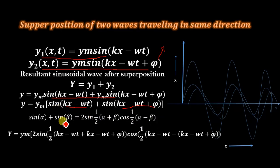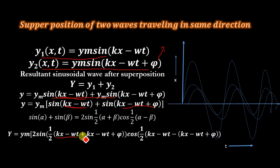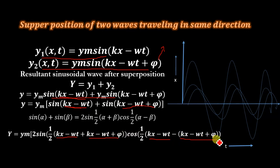Expanding using this trigonometric relation, we get: y = ym · 2·sin((1/2)·[(kx − ωt) + (kx − ωt + π)]) · cos((1/2)·[(kx − ωt) − (kx − ωt + π)]). Further simplifying this equation, the kx terms add to give 2kx, and the −ωt terms add to give −2ωt.